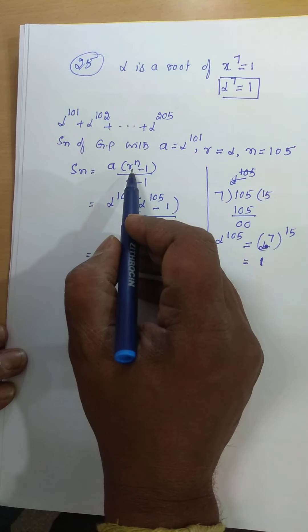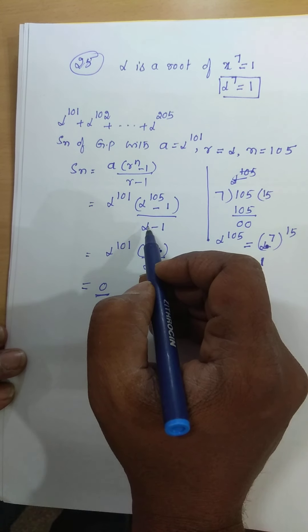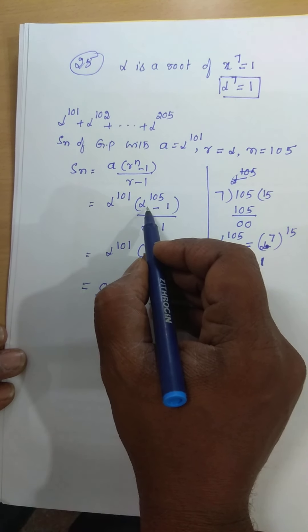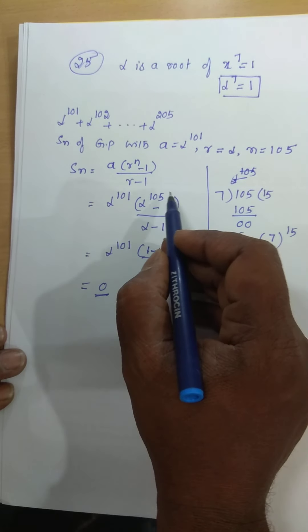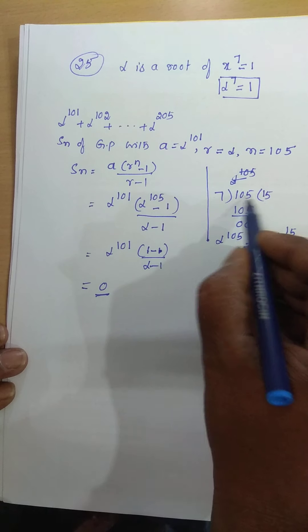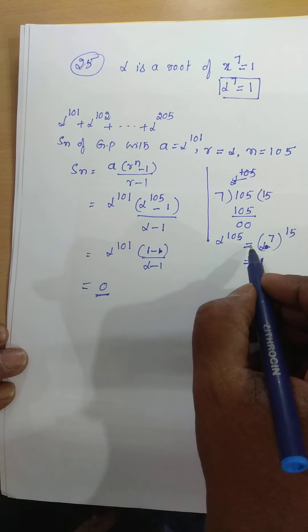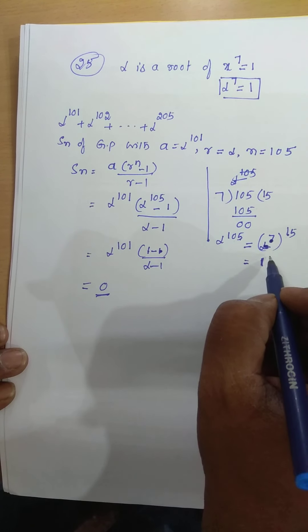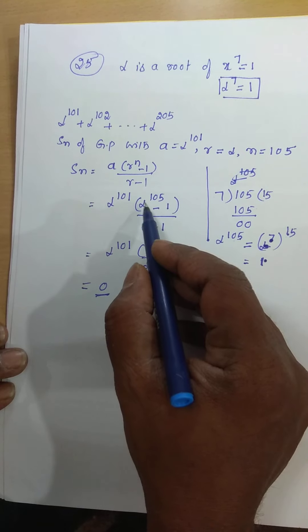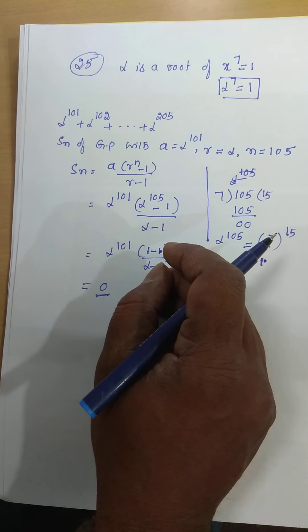Apply the Sn formula: a into r power n minus 1 divided by r minus 1. Substituting a and r. Now we want the value of alpha power 105. We know that alpha power 7, but alpha power 105 — the power should be expressed in the form of power 7. Therefore, 7 into 105 — divide — 15 times, that becomes 105, the remainder is 0. Therefore, alpha power 105 can be written as alpha power 7, all power 15. But alpha power 7 is 1, and 1 power 15 is 1. Therefore, substituting: 1 minus 1 divided by alpha minus 1, that becomes 0. Zero into anything is 0. That is the final solution.